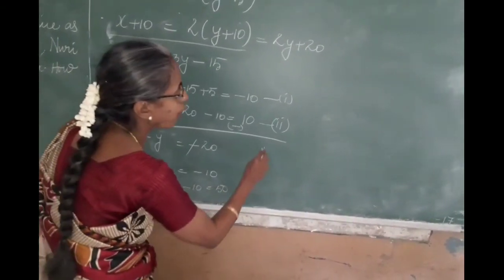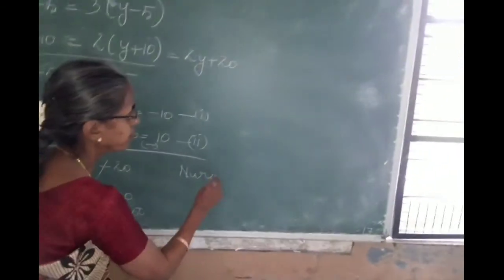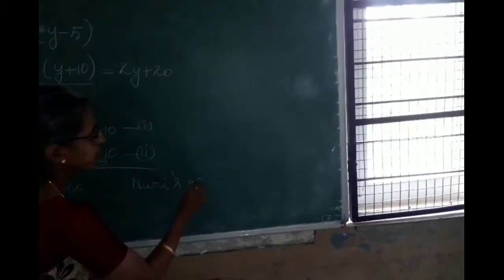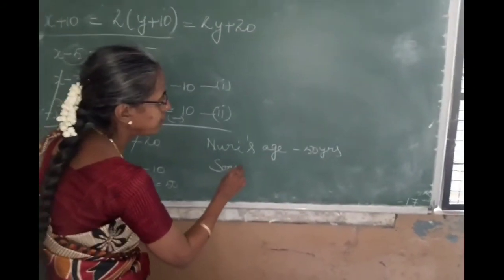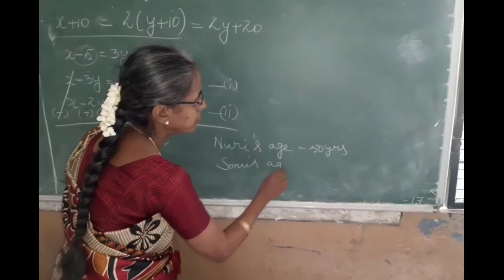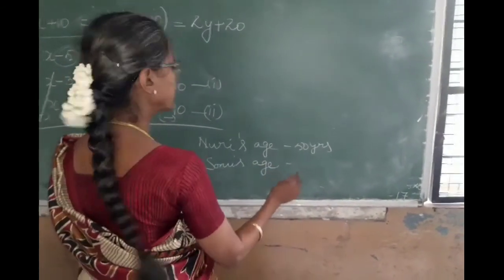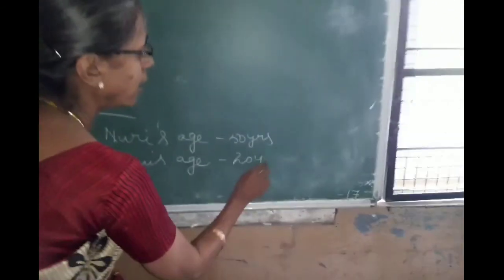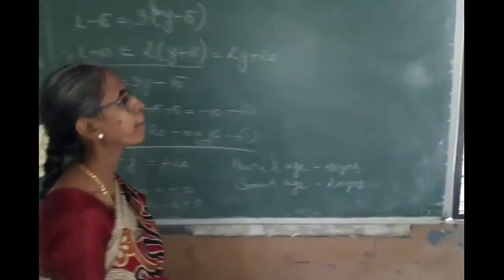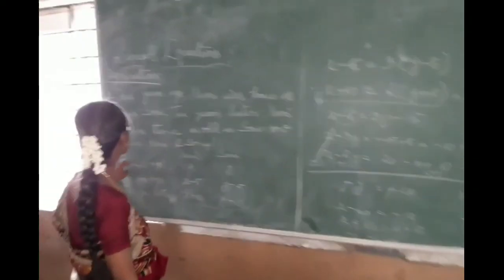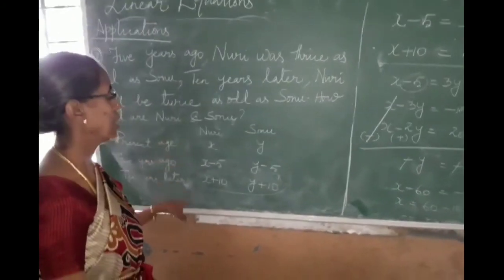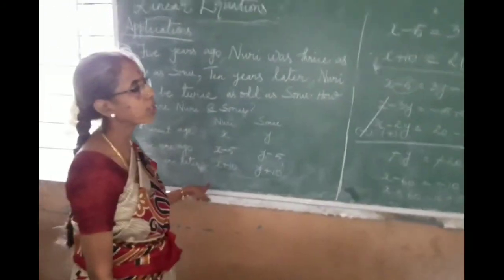So now we have got Noori's age 50 years, Sonu's age 20 years. This is the method for application-oriented sums. This time always remember to write like this for age sums. It will be easy. You will not commit any mistake.